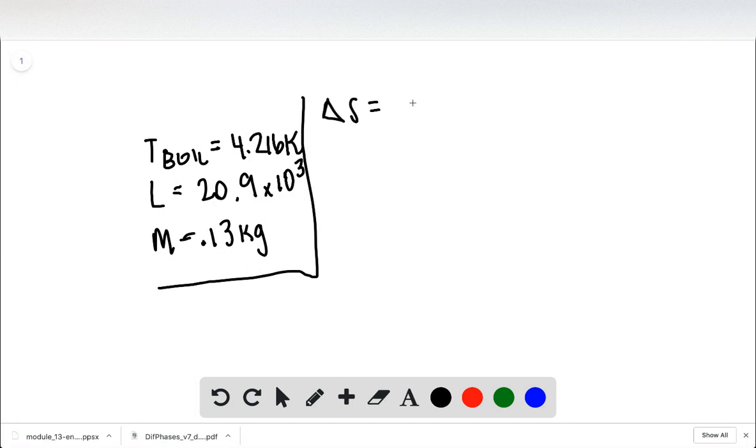Change in entropy in general at any point in time is Q divided by T. Isothermally, it's at a phase transition, so we just have to leave it at this. We don't have to do any integration or anything fancy.